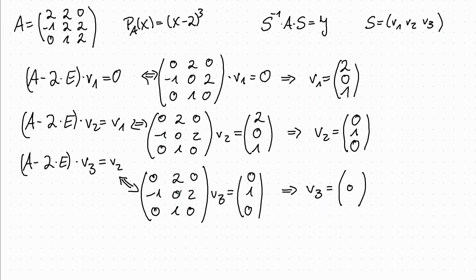And the second row gives us the condition that minus 1 times the first entry plus twice the third entry has to be 1. So we can choose the third entry to be 0 and the first entry to be minus 1, and this fulfills this condition.